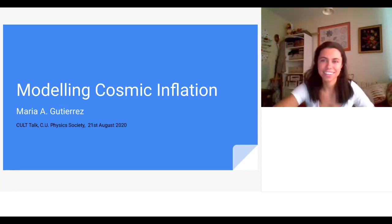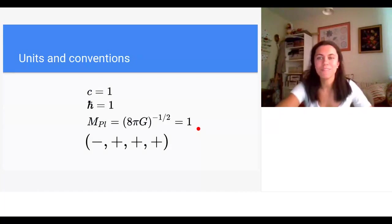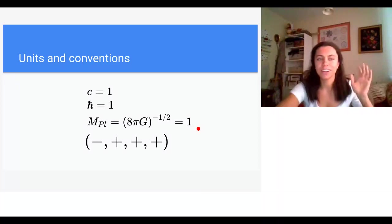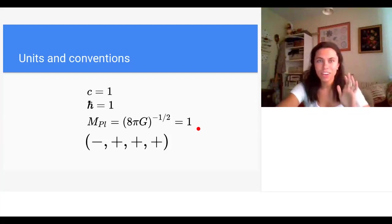Thank you Oscar and everyone for coming. Let's start with some housekeeping: I'm going to set the speed of light, h-bar, and Planck's mass all to one. You can always recover these factors from your final result using dimensional analysis. I'll use the mostly-plus sign convention, which is standard for general relativity, though opposite to what's used in quantum field theory.